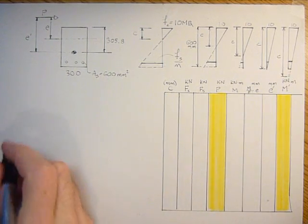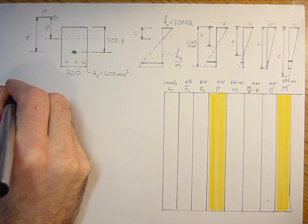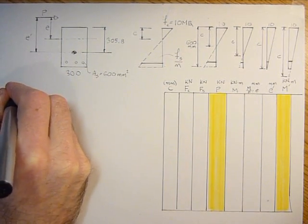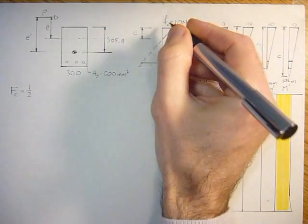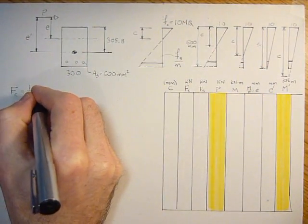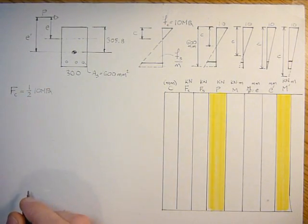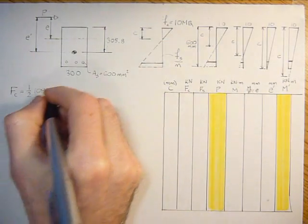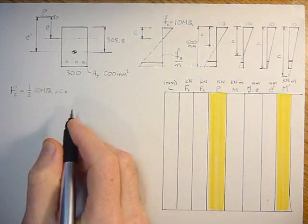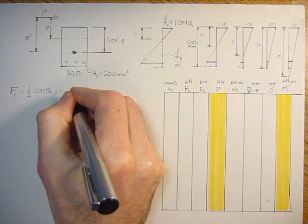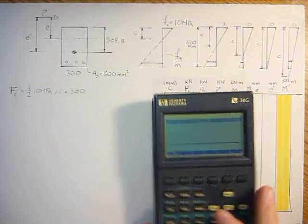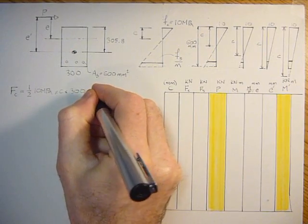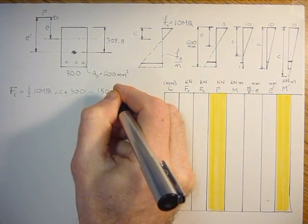So let's start that. We have the force in the concrete, and that's equal to one half of 10 MPa. This is a triangle here. One half of 10 MPa times C times B, which is 300. And then we can simplify that equation to 1500C.